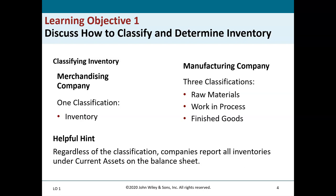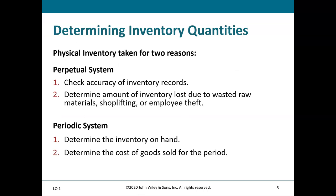Work in process is work that has been started but not completed to its final form. You have work in process throughout the month, but it's most important at the end of the accounting period — that's when we need to properly evaluate it. Finished goods are goods completely finished through the manufacturing process, ready to be sold but not yet shipped. Regardless of classification, all inventory is a current asset on the balance sheet.